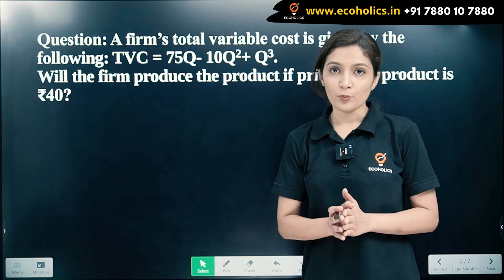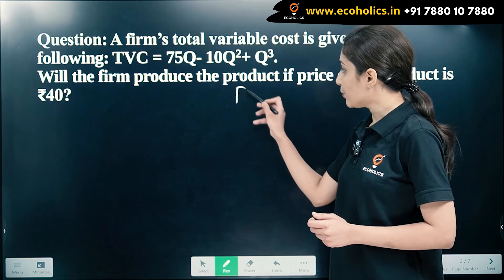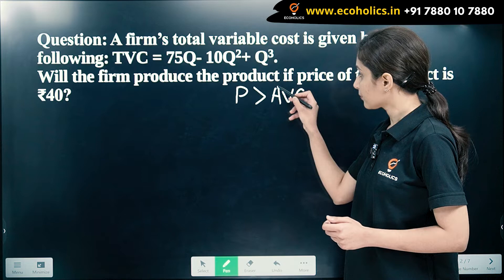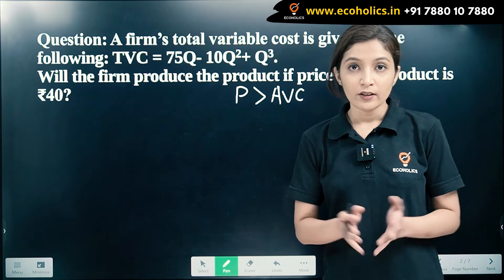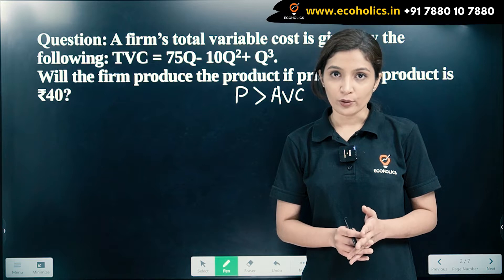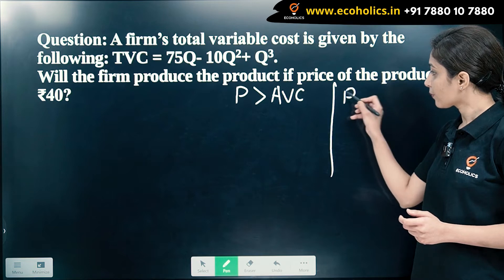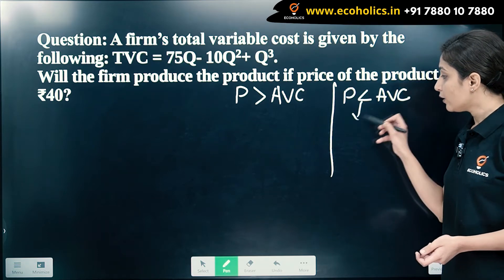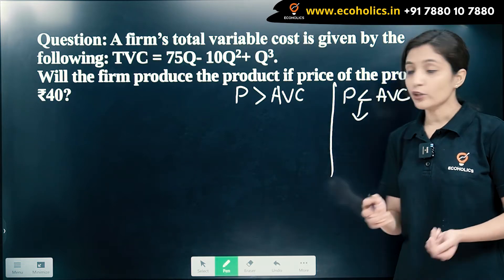In case of perfect competition, the firm will produce only when the price of the product is greater than the average variable cost. The price of the product should be greater than the minimum average variable cost. This is because in the short run, the firm should at least cover the variable cost. If the price is less than the average variable cost, it will not be profitable for the firm to produce any amount of output — it should close down.